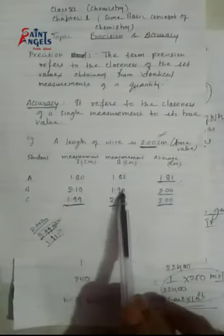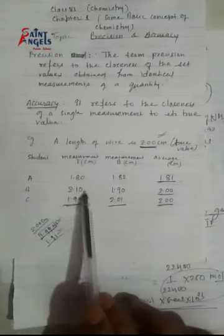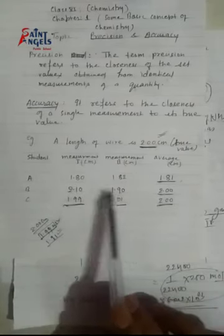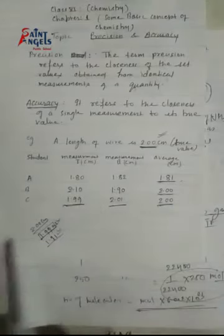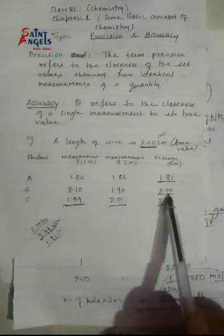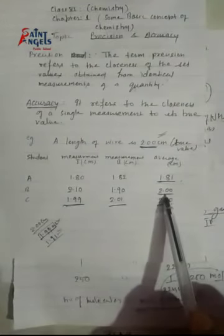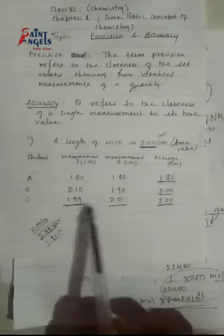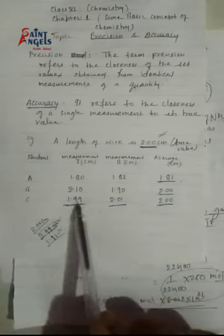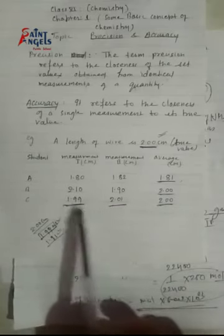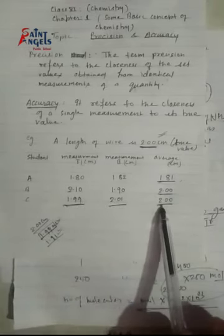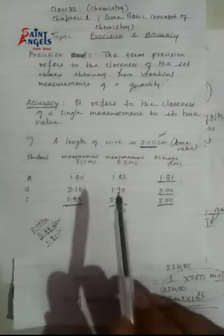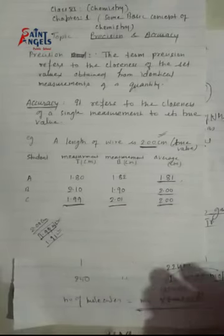तो यह difference होता है accuracy and precision में। A का क्या था — दो जो experiments उसने किए दोनों काफी close value रहे, लेकिन जो average value था वो true value से काफी gap था — तो यह precise value तो है, लेकिन accuracy नहीं था। B का क्या था — काफी gap है दोनों experiments में: 2.10 है और 1.90 है — तो यह precise value नहीं कहलाएगा, क्योंकि दोनों के बीच में काफी gap रहा। लेकिन दोनों का average value true value से match कर रहा है, तो accuracy तो है, लेकिन precise value नहीं है। और C का देखा जाए तो दोनों experiments में काफी closeness है — दोनों precise values हैं — और साथ ही साथ average value true value से match कर रहा है। That means C जो student है उसका precise value भी है और accuracy भी है। Thank you.